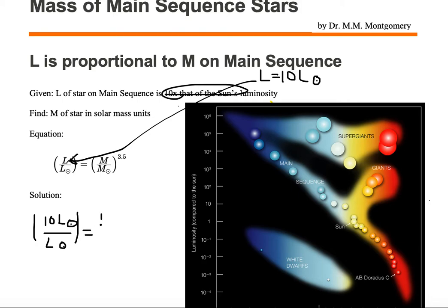Now that is equal to the mass that we want to solve for divided by the mass of the sun.